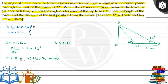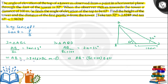Now in triangle ABD, we have AB divided by BD. Here BD equals BC plus 100. So AB = (BC + 100) × tan 32°, which equals (BC + 100) × 0.6248. This is our second equation.